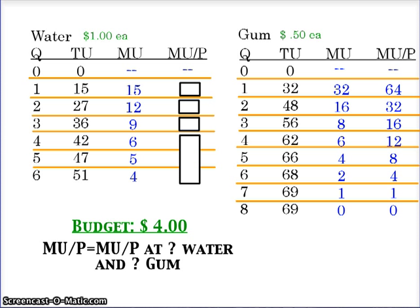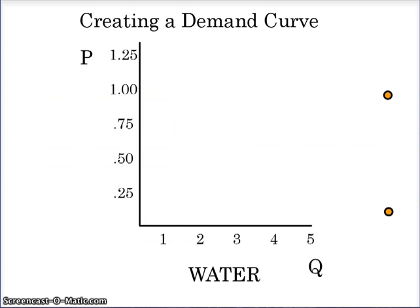Notice I blocked out a few numbers for water. The reason why I did that is because we're going to change the numbers for water. Ultimately, what we're going to try to do is assess water so that we can create a demand curve for water. In the previous video, you saw that marginal utility over price equals marginal utility over price at two water and four gum.